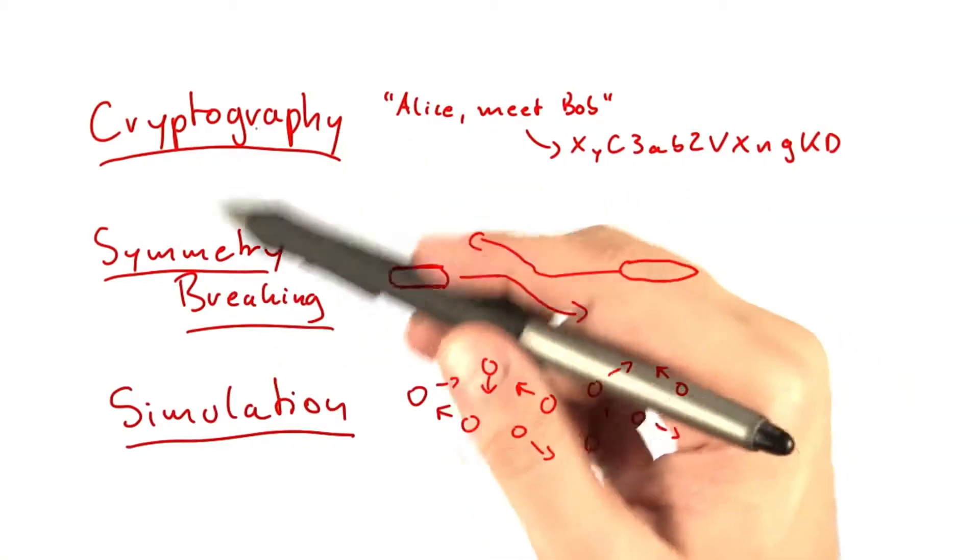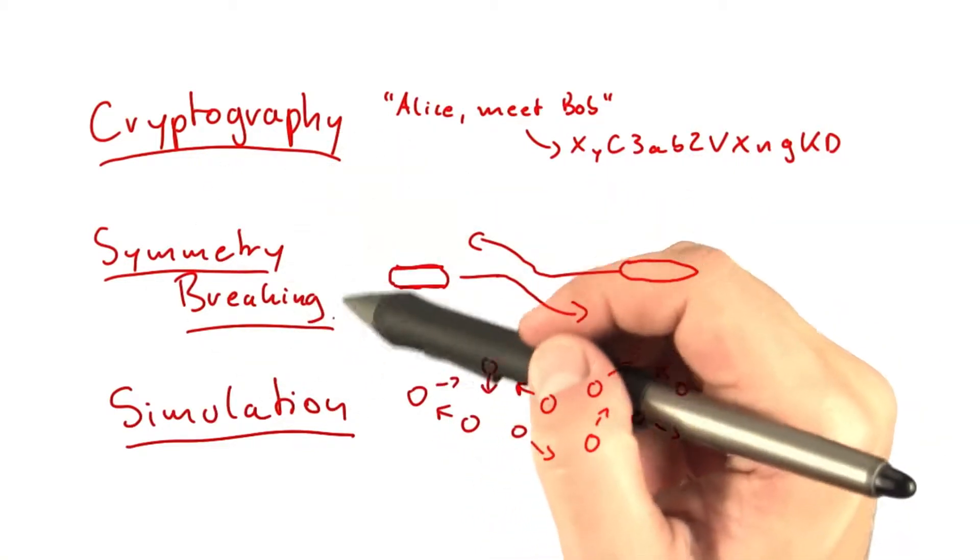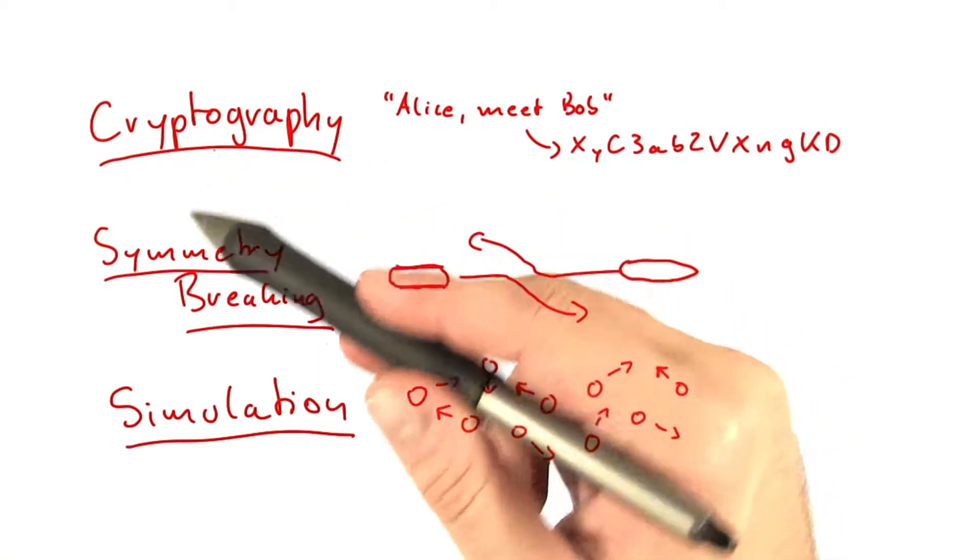Now in general, and you might have come across one or more of these examples, using randomness is of course quite important in computer science.